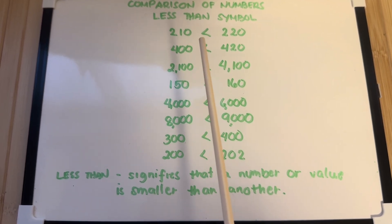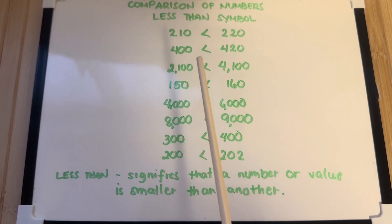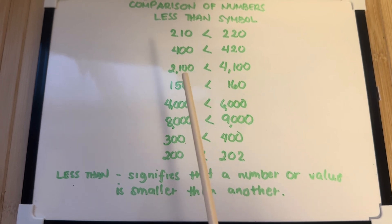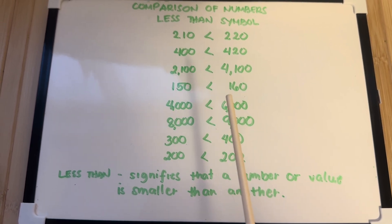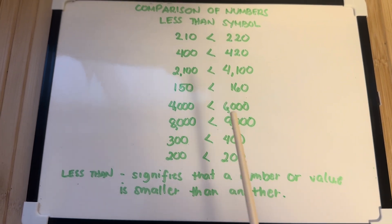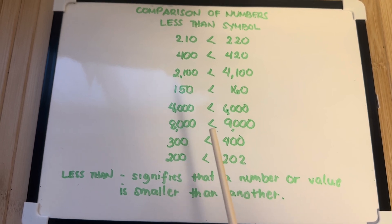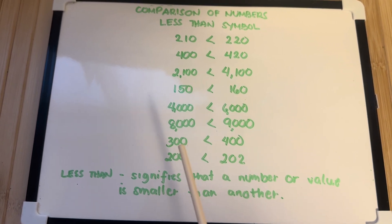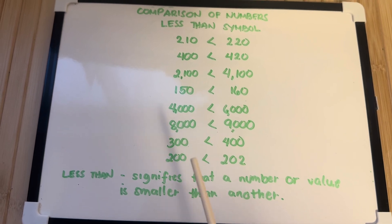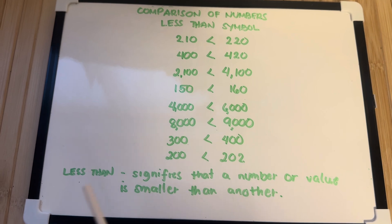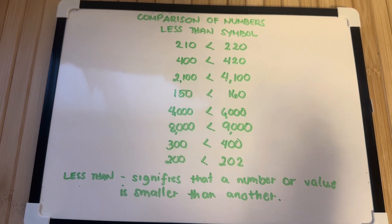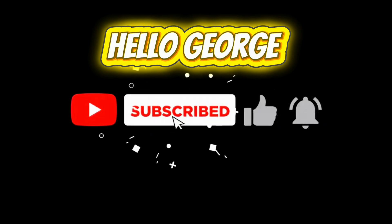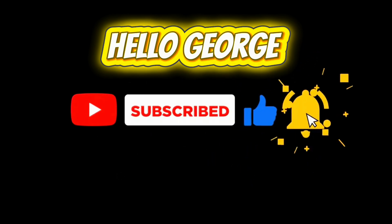210 is less than 220. 400 is less than 420. 2,100 is less than 4,100. 150 is less than 160. 4,000 is less than 6,000. 8,000 is less than 9,000. 300 is less than 400. 200 is less than 202. Let's define less than.